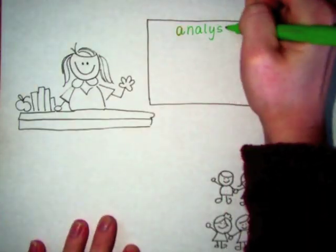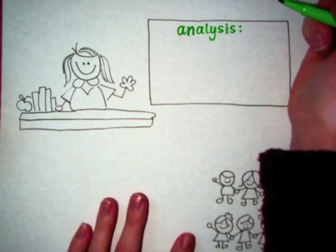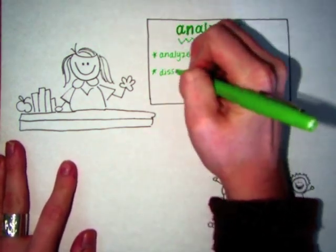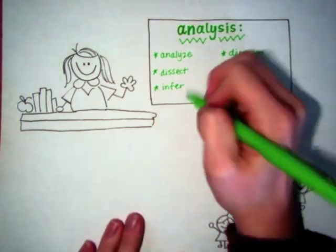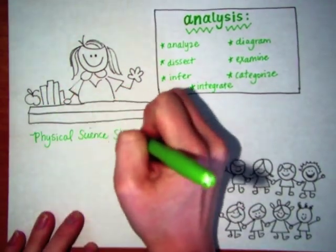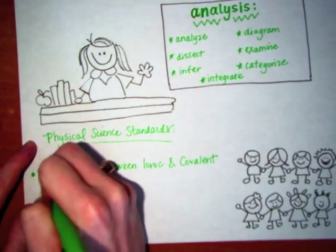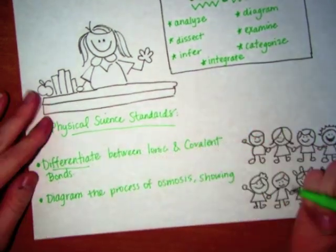The analysis level asks students to deconstruct information into smaller pieces, allowing them to make inferences about the information that they are learning. As a teacher, you are testing a student's ability to determine how parts come together to form a whole. Analytical questions begin with words like analyze, dissect, infer, diagram, or examine. This is my favorite domain to use in my science class because my students are able to really showcase their knowledge and begin to demonstrate higher order thinking.